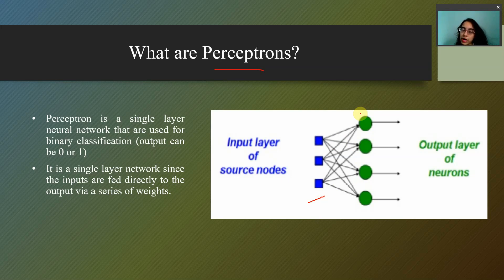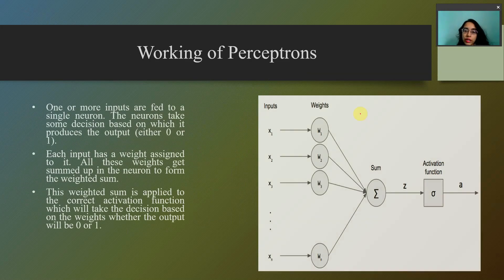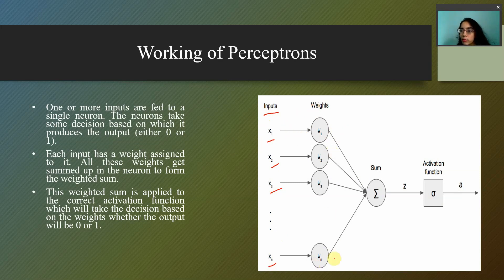Now we have to understand how perceptrons work, because depending on this working, you will understand how the artificial neural network works. Let's consider this figure: x1, x2, x3, up to xn — all these are the inputs applied to the input layer. After these inputs are applied, random weights are assigned to all of them: w1, w2, w3, up to wn. Why are these weights assigned? These weights help the neural network determine which input or parameter has the highest importance. For example, if the weight of x1 is 5, w2 is 6, and w3 is 7, the neural network determines that x3 is of highest importance and should be considered first with utmost priority.